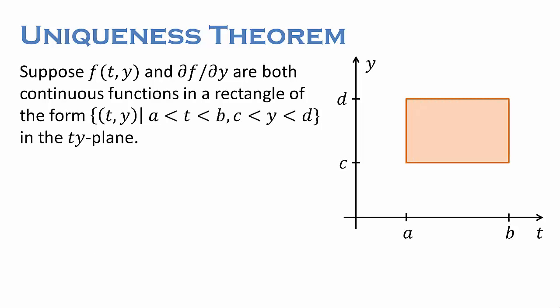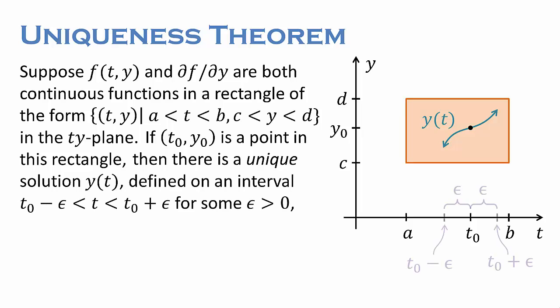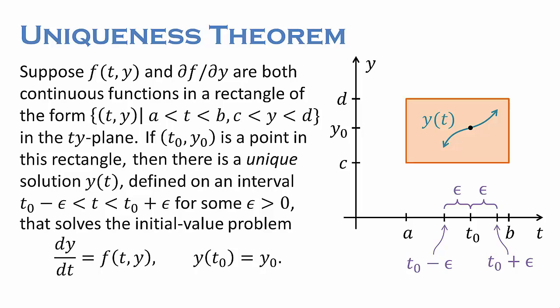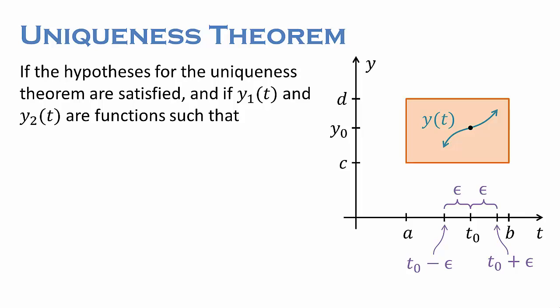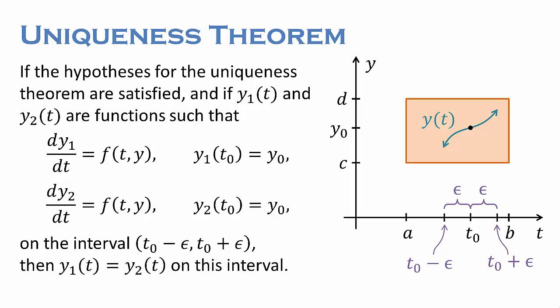Second, let's talk about uniqueness. Suppose f(t, y) and the partial derivative of f with respect to y are both continuous in a rectangle containing all points (t, y) with t between a and b and y between c and d. If (t0, y0) is a point in this rectangle, then there is a unique solution y(t), defined for all t from t0 − ε to t0 + ε, that solves the initial value problem. In other words, if the hypotheses of the uniqueness theorem are met and if you think there are two functions y1 and y2 that both satisfy the initial value problem on the interval from t0 − ε to t0 + ε, then in fact these two functions are the same: y1 = y2 on this interval.